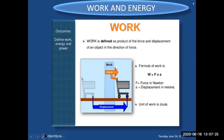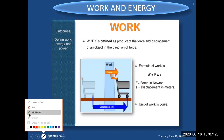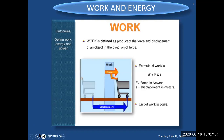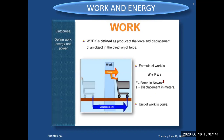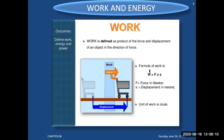Another way to define work: it is the dot product of force and displacement. It is a scalar quantity. The formula to calculate work done is W = F · s, which is the dot product of force and displacement. This is the mathematical formula to calculate work done.